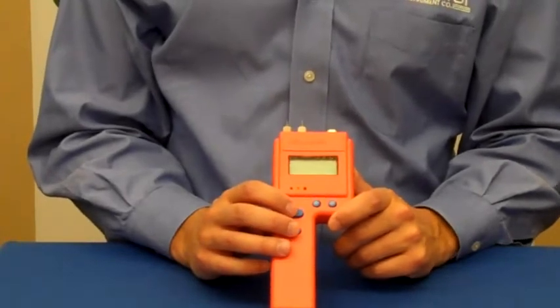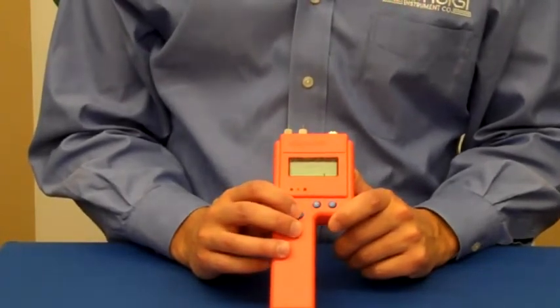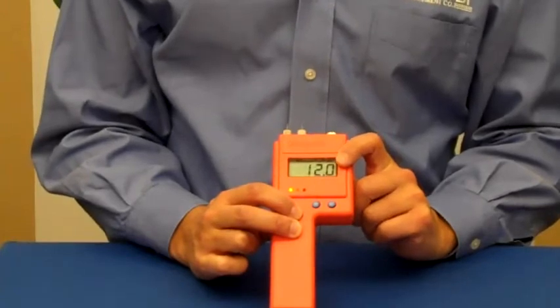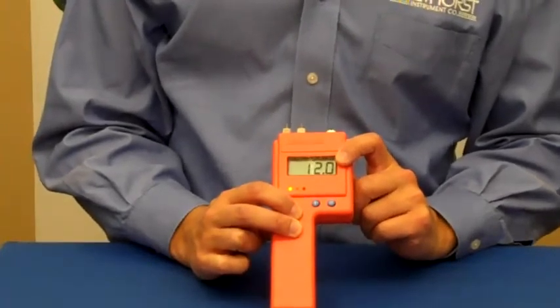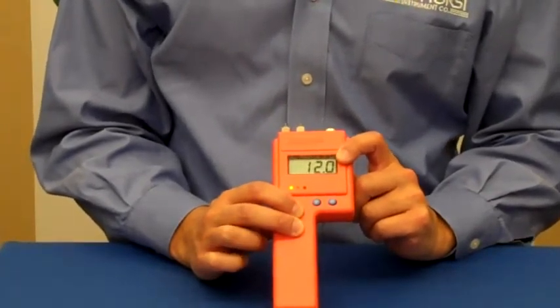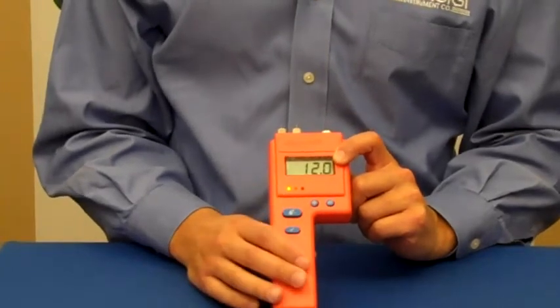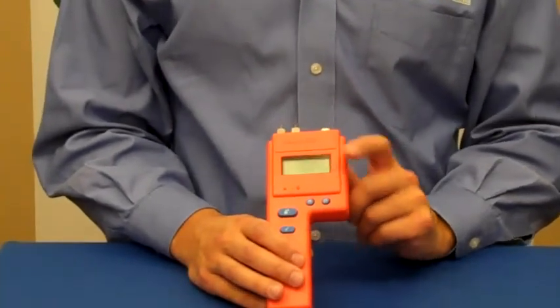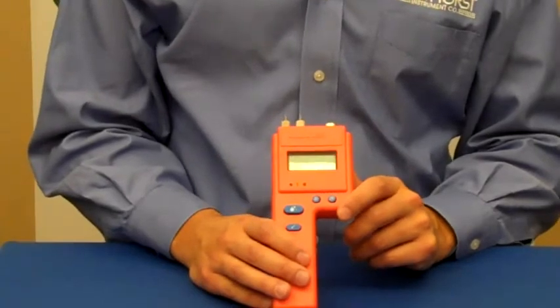The meter also has a built-in calibration check. By just pressing these two buttons, it tells you it reads 12.0, and that's an indication that the meter is in electrical calibration. That's important to do periodically before you take measurements, just to make sure that the meter is in calibration.